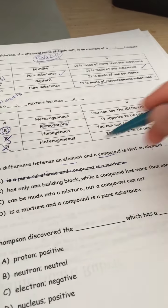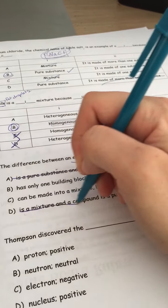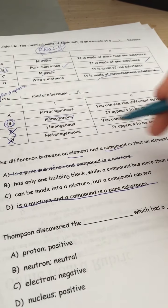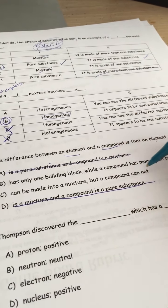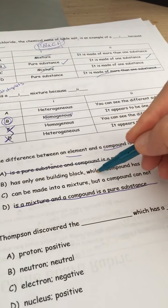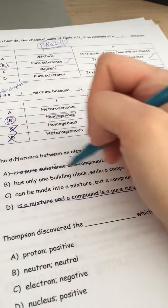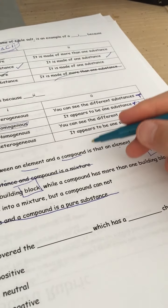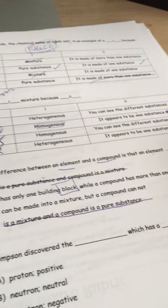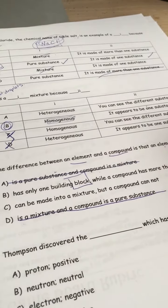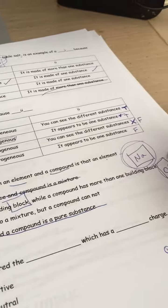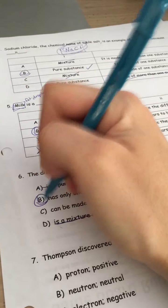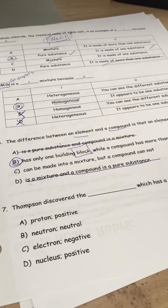Here's another one that says mixture, let's cross that out. Can be made into a mixture? Well, maybe. But this one makes the most sense here, one building block, like one atom. Think of the blocks on the periodic table. A compound has more than one, so elements have only one thing. Compounds have more than one thing, so we're going to go with B on that question.